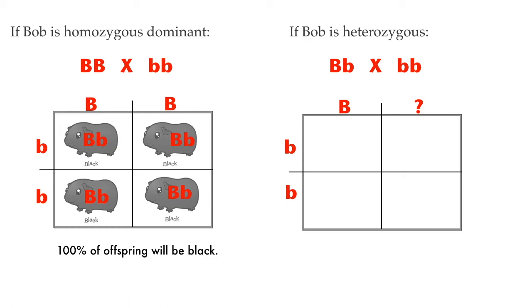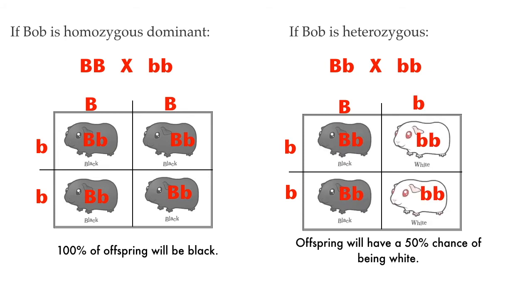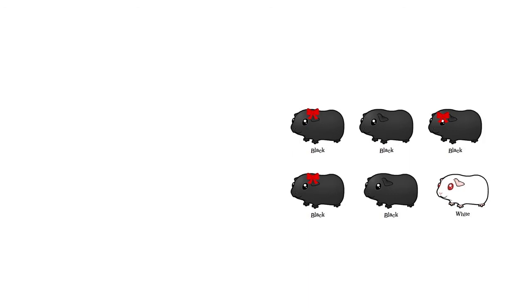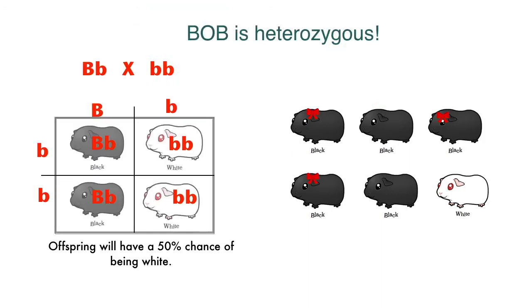If, on the other hand, Bob is heterozygous for fur color, then his offspring under a test cross will be half heterozygous with black fur and half homozygous recessive with white fur — or at least there would be a 50% probability that they would be born with either black fur or white fur. Finally, the day arrives. Bob and Sarah's babies are born — they had six babies, and one of them is white. It's not 50%, but that's enough to let you know that Bob must be heterozygous, because that is the only way for one of his babies to be born with white fur.